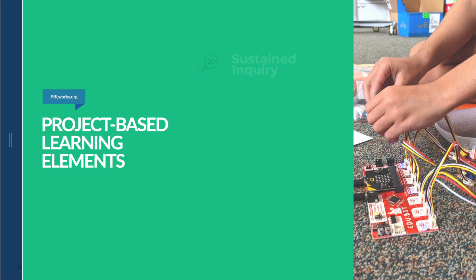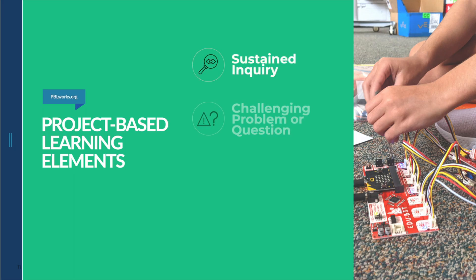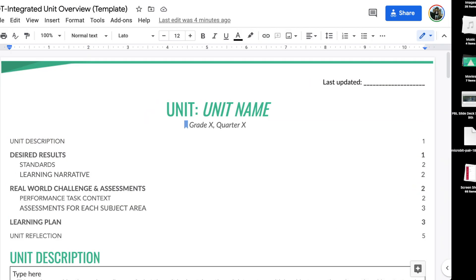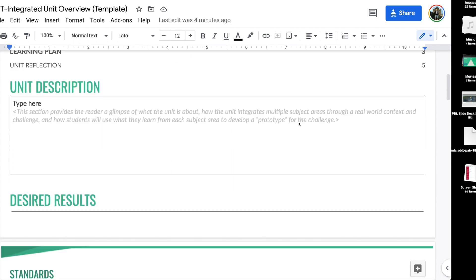As you can see, there are a lot of project-based learning elements: sustained inquiry, a challenging problem, student voice and choice, and a public product — all integrated into one unit or project. Additionally, you can see how the chain of events contains a cause-and-effect relationship between them.